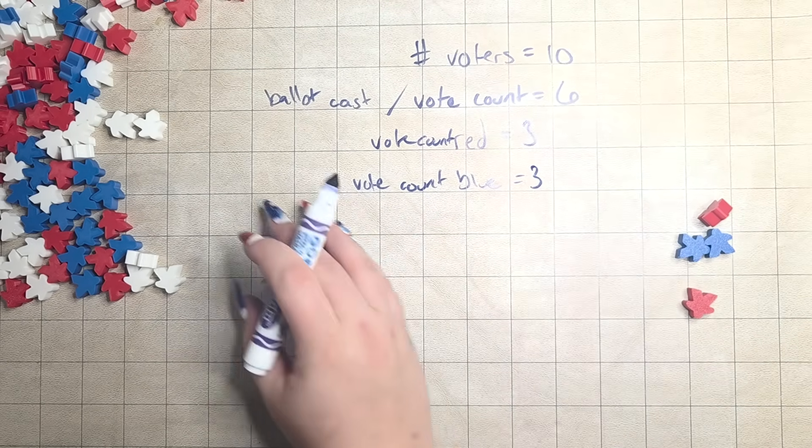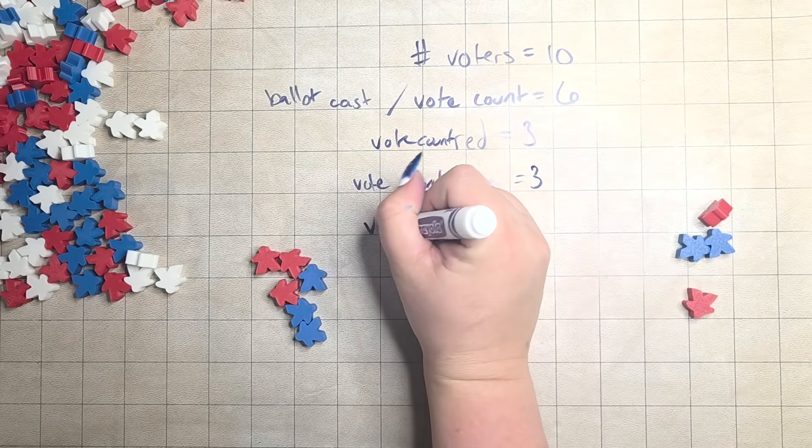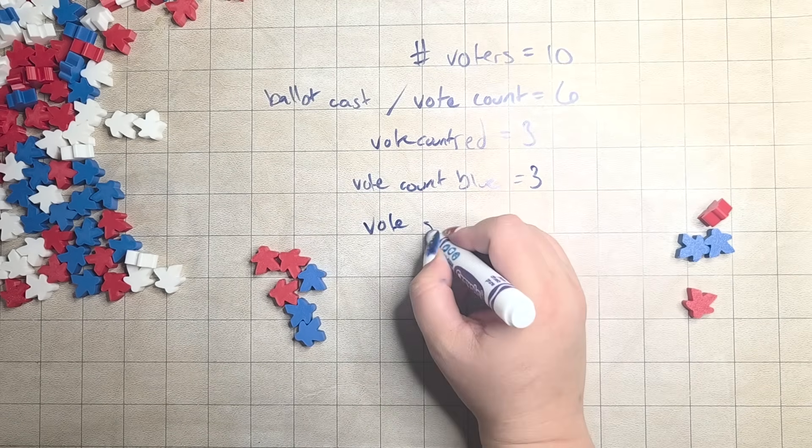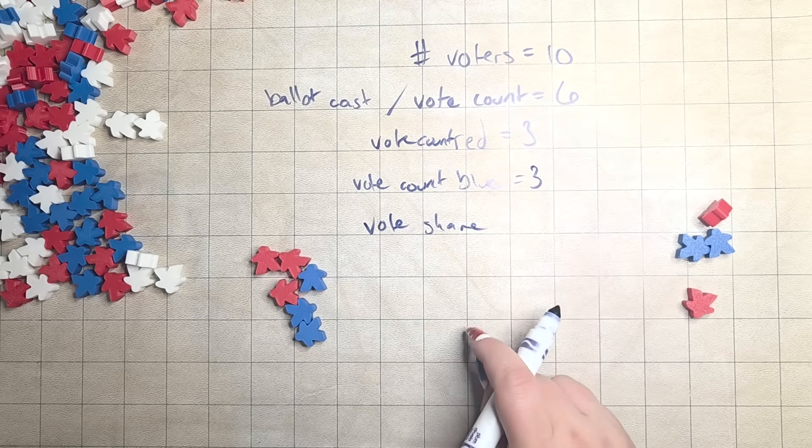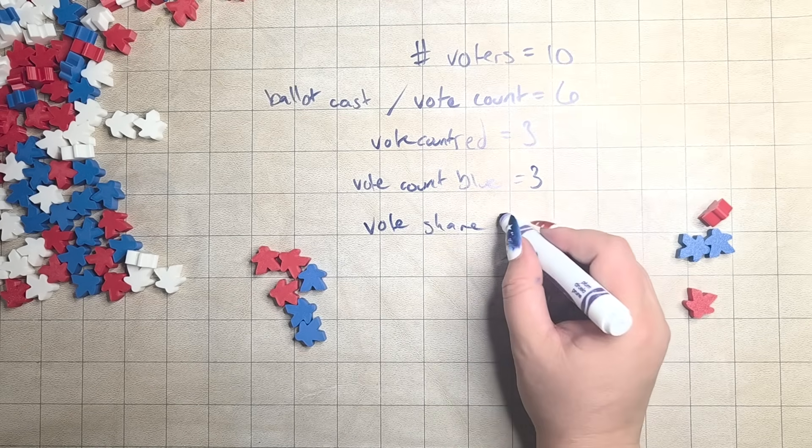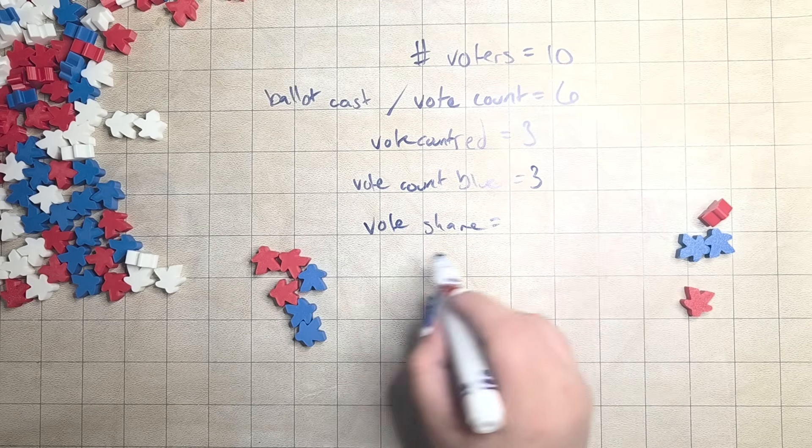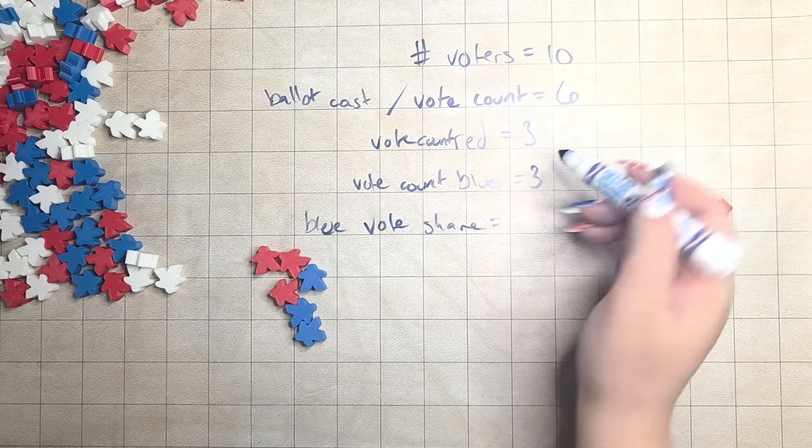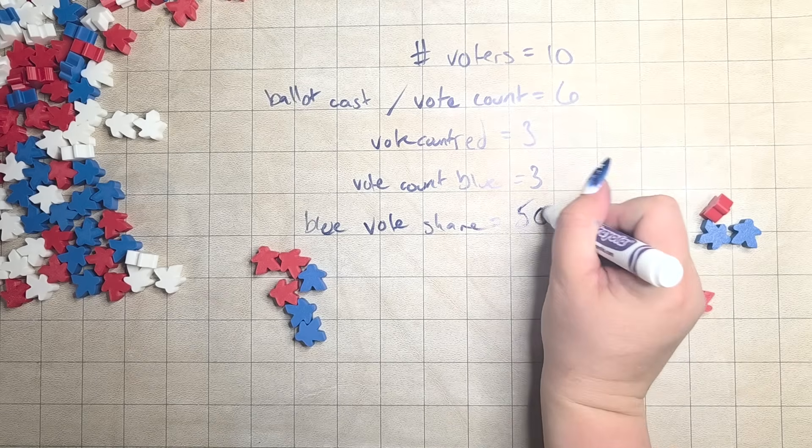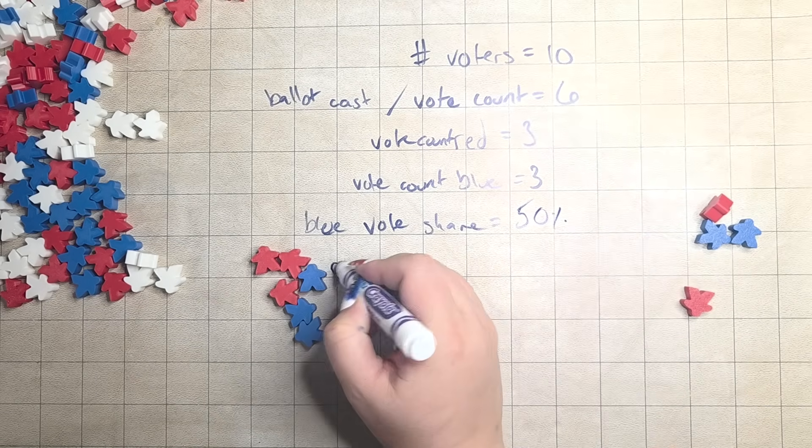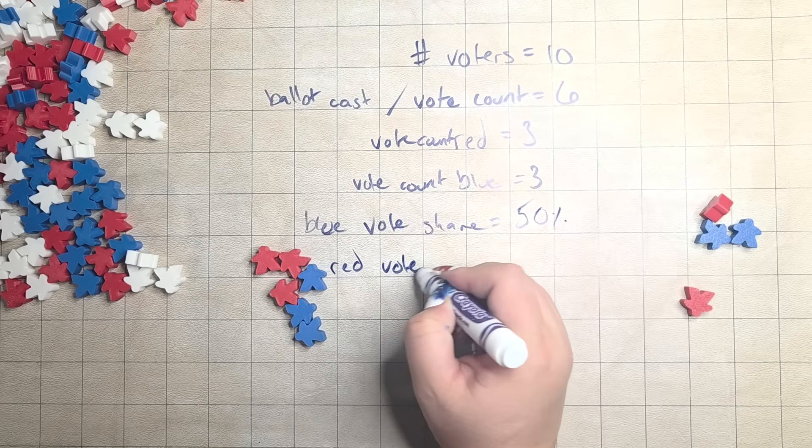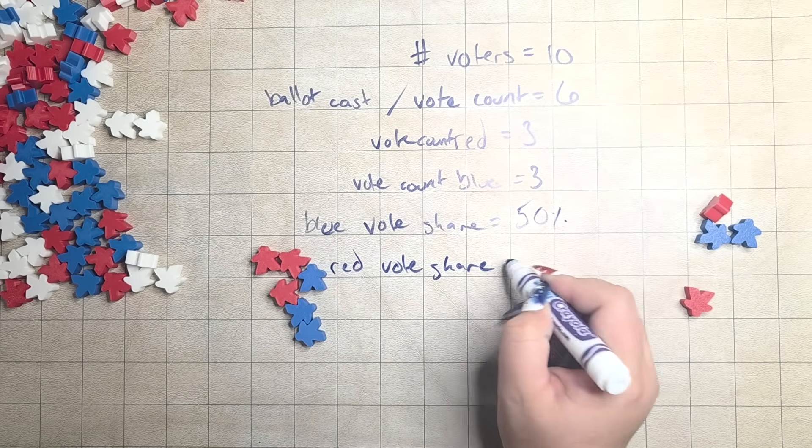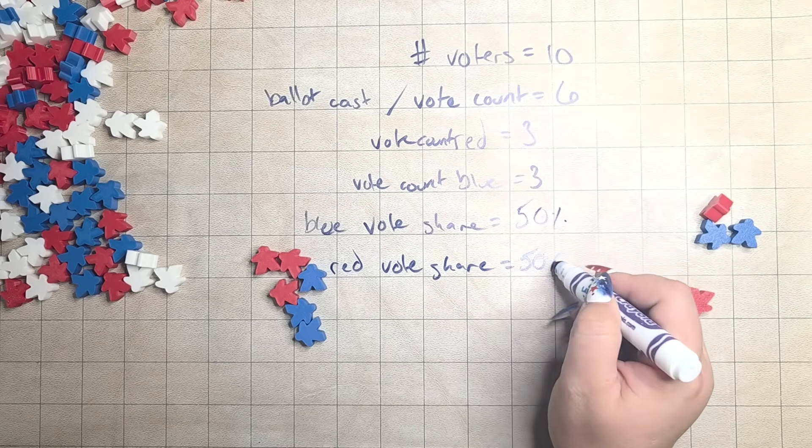So, now for vote share. And please pardon my terrible handwriting. So, for blue, we have 3 out of 6. So, that would be, of course, 50%, right? And for the red vote share, we also have 50%, or 3 out of 6.